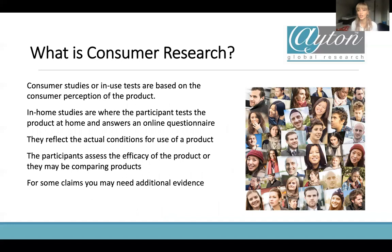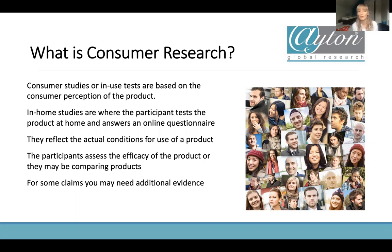I want to look at claim substantiation methods — how we can substantiate our claims to make sure we have that evidence. I'm going to talk particularly about consumer research because that is what we do at AGR. Consumer research is about consumer perception — what consumers can perceive themselves, what they can self-assess. So something like 'my skin feels really soft and moisturized' is a consumer claim, whereas 'moisturized for 24 hours' is a clinical test claim. One is someone saying they feel moisturized; clinical testing is very much objective fact.